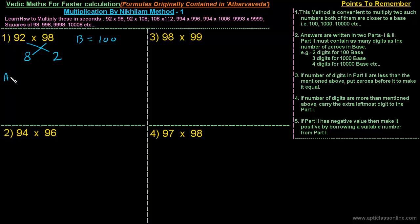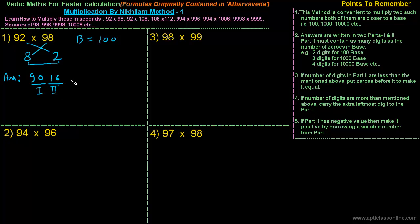The answer has two parts. In the first part, we write the difference of 92 and 2, or equivalently the difference of 98 and 8 — in either case it is 90. That is the first part. The second part, written in continuation of the first, is the multiplication of the two deficits: 8×2 = 16.